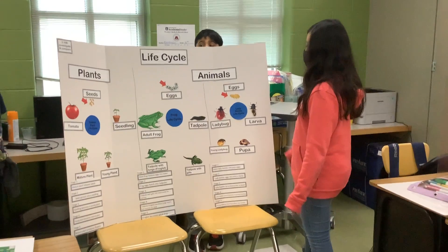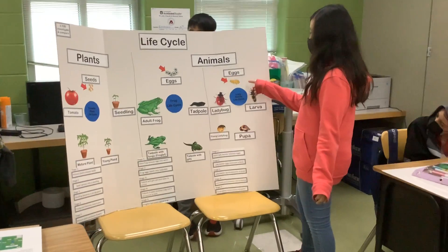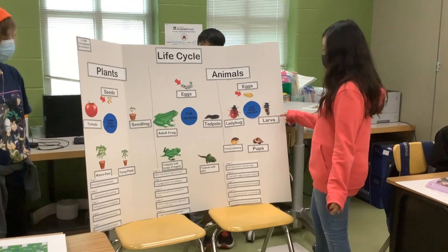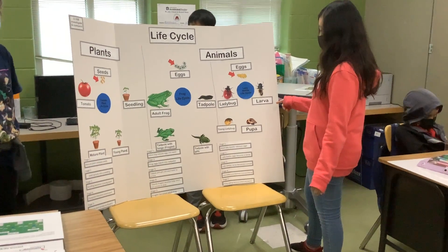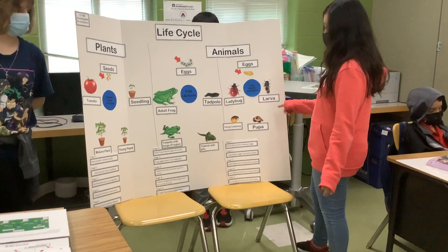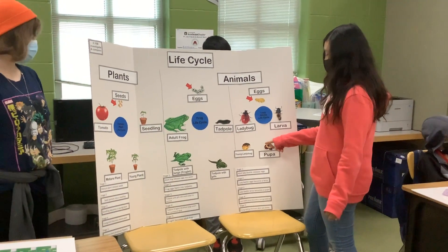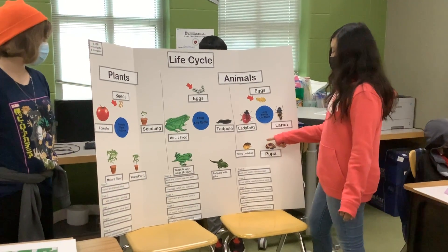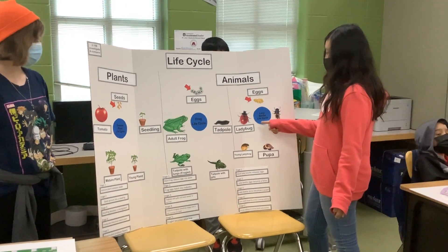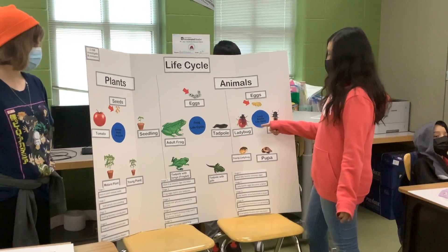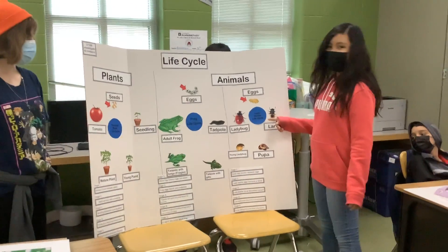A ladybug makes eggs. The eggs continue to grow into a larva. The larva continues growing into a pupa, and when the pupa grows, it will turn into a young ladybug. The young ladybug will then turn into a ladybug. Then the ladybug will reproduce more eggs and start the cycle all over again.